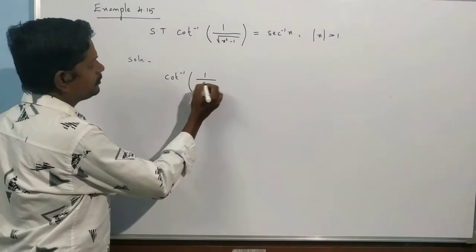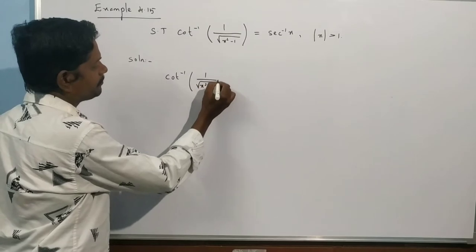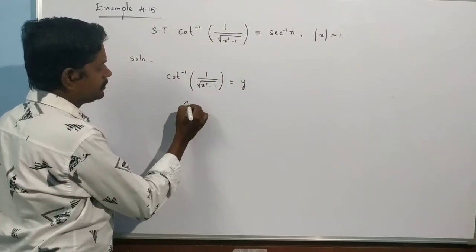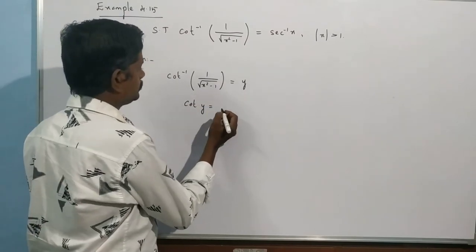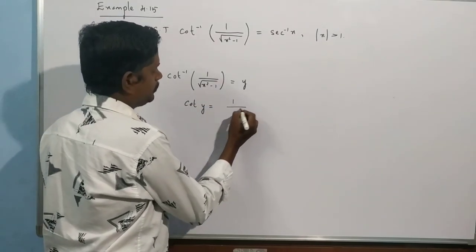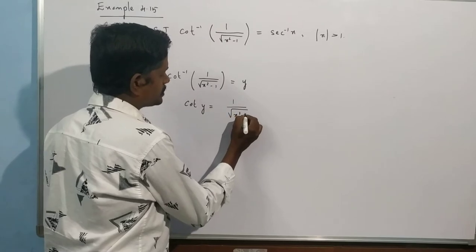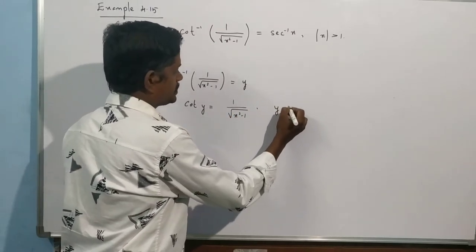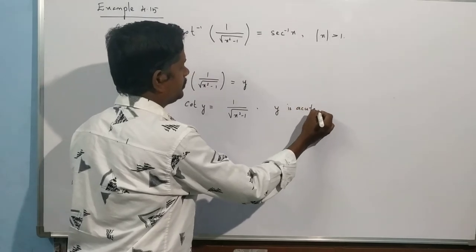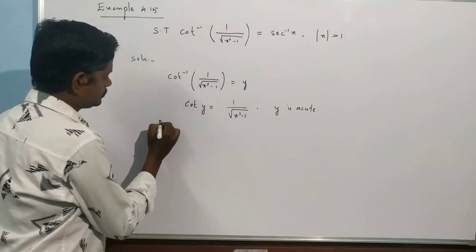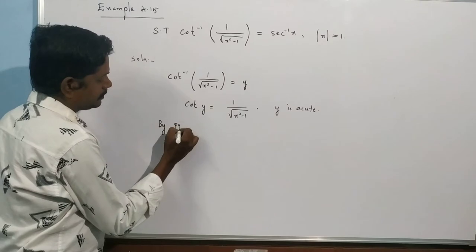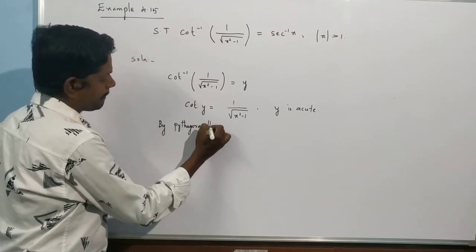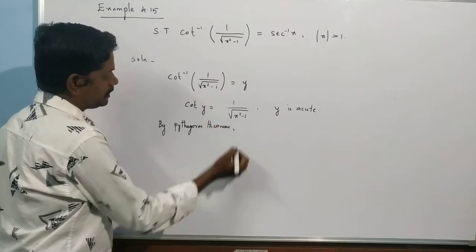So cot inverse of 1 by this, y is equal to cot y equal to 1 by root of x square minus 1. Y is acute. By Pythagoras theorem.